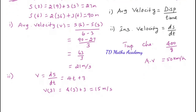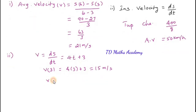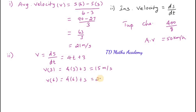The next part is v of 6 — the instantaneous speed at 6 seconds. Using the same differentiated formula ds/dt equals 4t plus 3, substitute t equals 6: 4 into 6 plus 3 equals 24 plus 3 equals 27 meters per second. So at six seconds, the instantaneous speed is 27 meters per second.